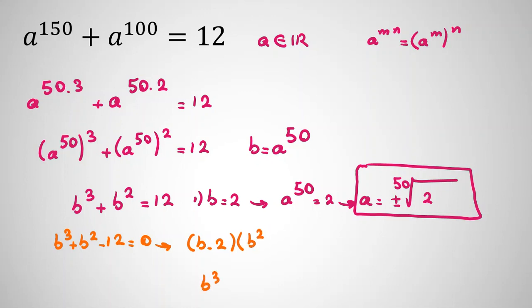It will be b cubed minus 2b squared, and then plus 3b squared minus 6b. We don't have b here, so we place plus 6b minus 12. So it equals 0.